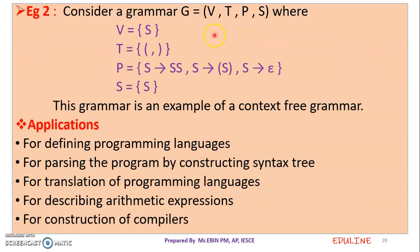In the next example, this is a context-free grammar. In this format, alpha tends to beta is a production rule. In the production rule, the length of alpha is equal to the length of beta. We can define a programming language as a context-free grammar. Syntax trees are generated from this context-free grammar. In a programming language, we can generate syntax trees.